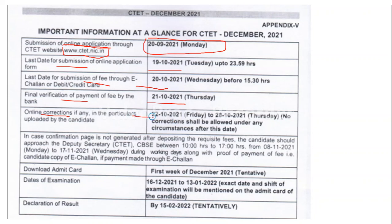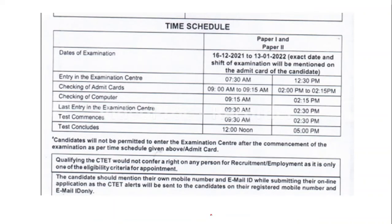If there are any corrections, you can correct from 20 October 2021 to 28 October 2021. You can download the admit ticket in the first week of December. The date of examination is from 16 December 2021 to 13 January 2022, and the declaration of result is by 15 February 2022. These dates are tentatively released.